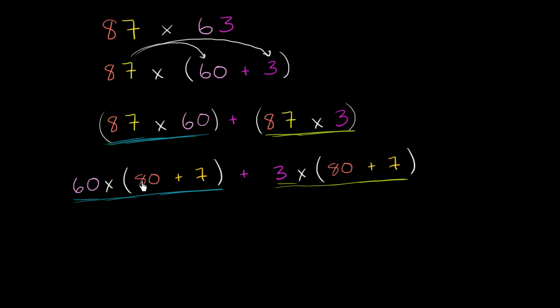We can distribute the 60 times 80 plus 7. So this is going to be 60 times 80 plus 60 times 7 plus 3 times 80 plus 3 times